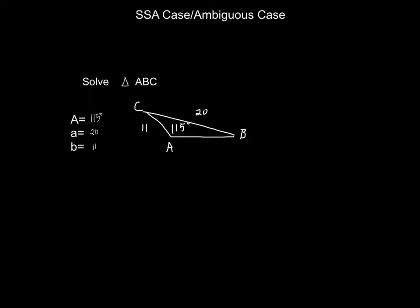This is also, I didn't mention, the side-side angle case, or the ambiguous case, in which we're flipping our law of sines and using it to find angles instead of finding sides. So we have sine B over 11 equals sine 115 over 20. B equals 29.9.